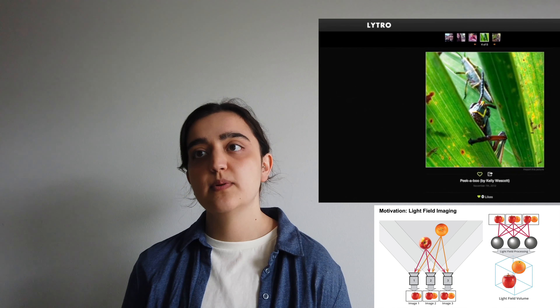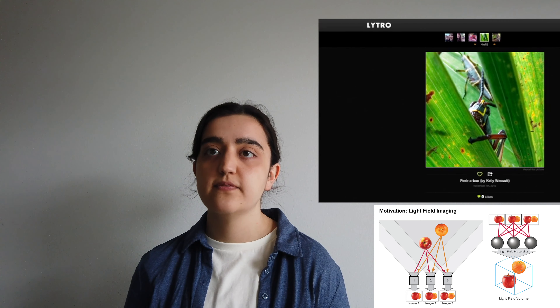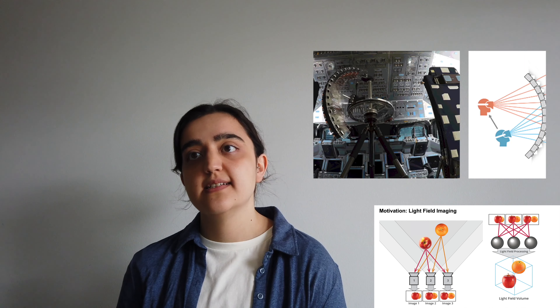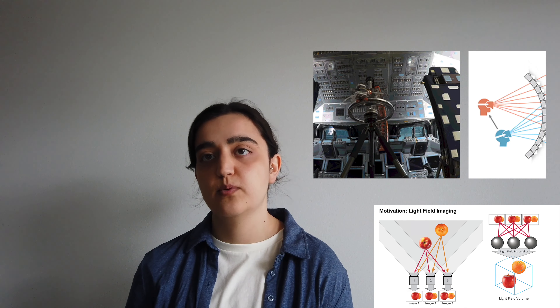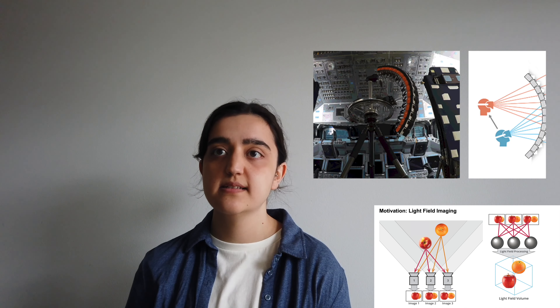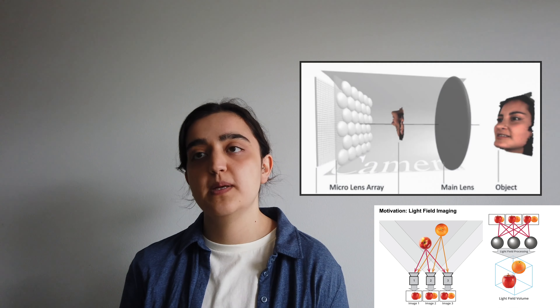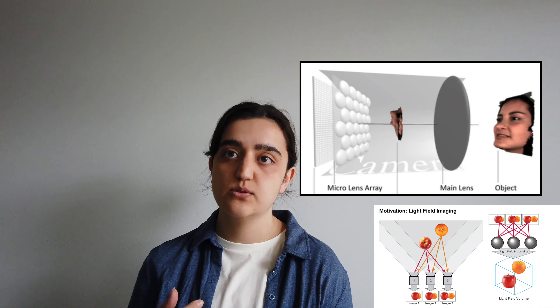For example, this is a light field captured by a Lytro camera, which is also a plenoptic camera. To capture the light field, multi-camera arrays can be used, like Google did before, by using GoPros placed at 360 degrees. Another way is using an array of microlenses placed in front of the image sensor.